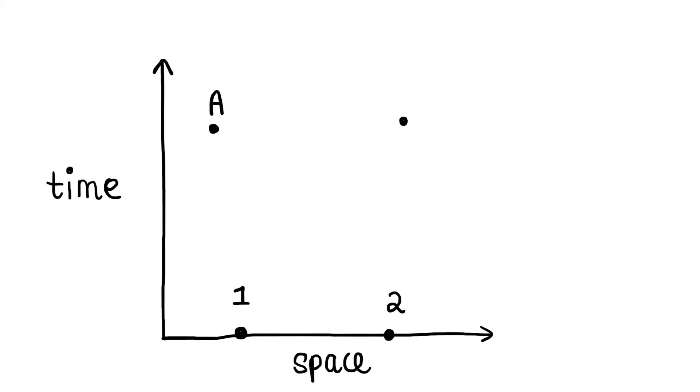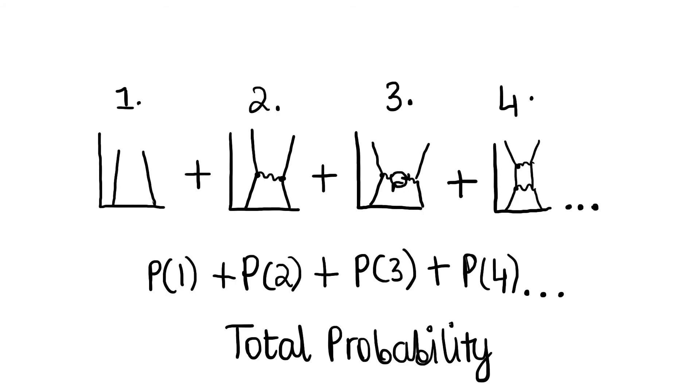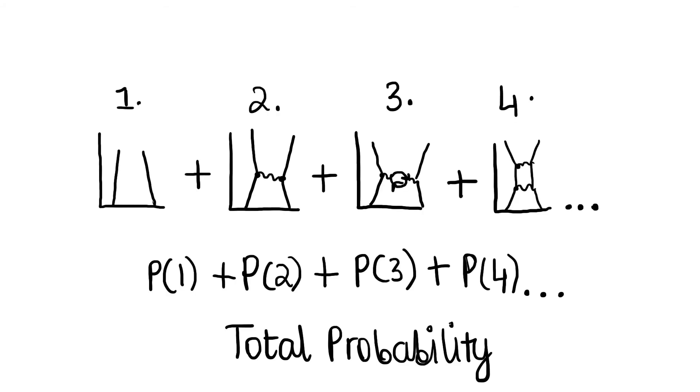Let's say we want to calculate the probability that these two electrons here move to A and B. There are multiple ways for this to happen. And that's why we have to draw all the possible diagrams and add all the probabilities together.